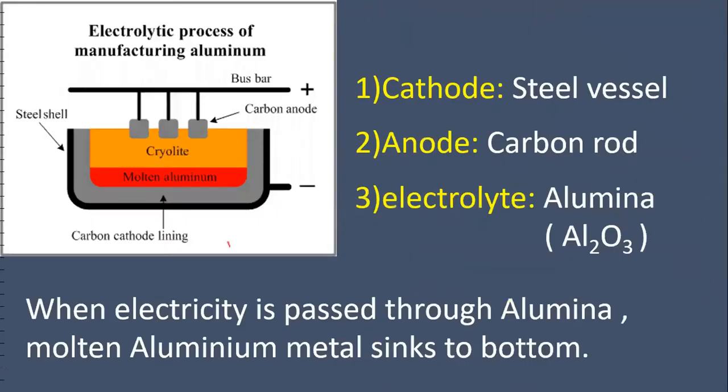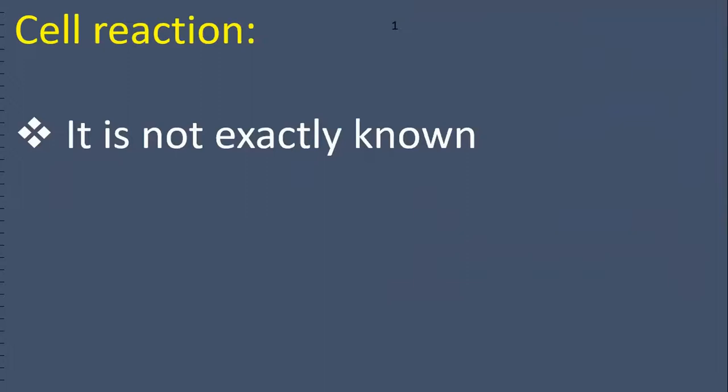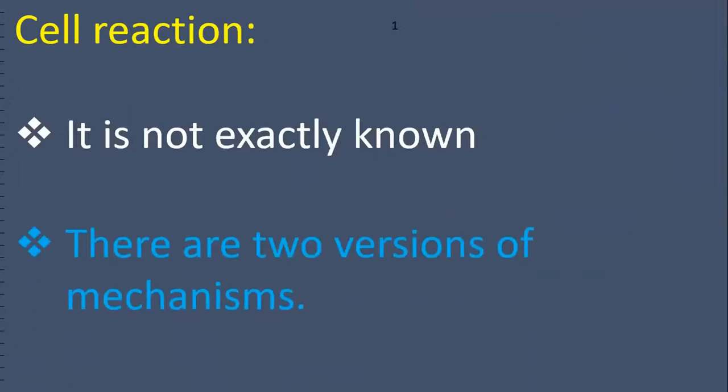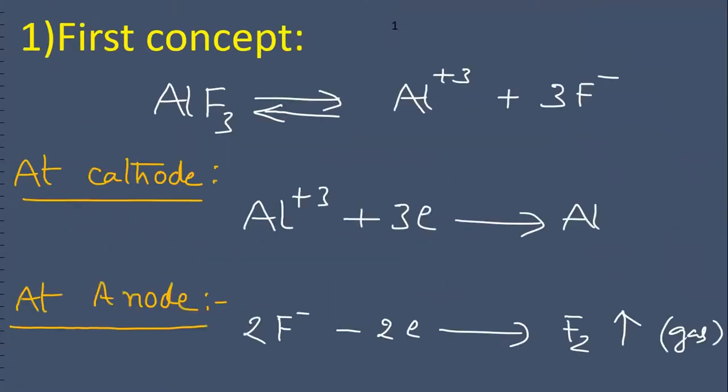When you conduct electrolysis to the alumina, then molten aluminum metal comes down. What is the cell reaction? The cell reaction is not exactly known. There are two types of versions to understand the mechanism.